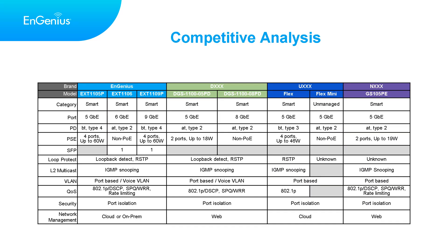Ingenius provides a diverse range of switch extenders tailored to various port densities, with support for both PoE and non-PoE. These extenders include essential switch features such as VLAN trunking, VLAN support, voice VLAN support, loopback detect, RSTP, IGMP snooping, port-based VLAN, DSCP, WRR, and port isolation. Ingenius Cloud allows administrators to manage and monitor their network infrastructure from a centralized interface, providing insights into network performance, user activity, and potential issues. Ingenius Cloud Network Management offers increased flexibility, cost savings, and improved scalability.